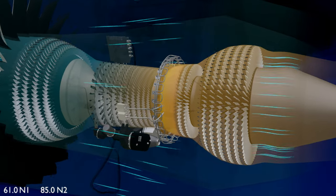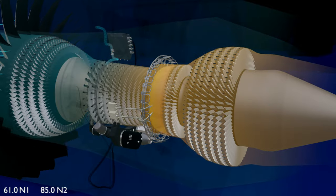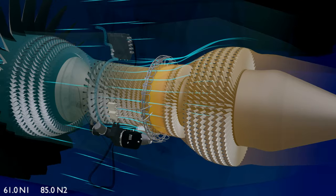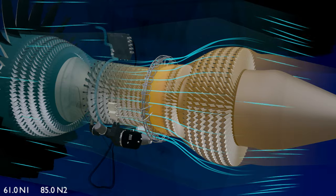One of the unique systems on the GE90 is the core compartment cooling. The engine bypass air through a CCC valve is circulated outside the core case to keep the temperature in the section down and ensure the engine accessories continue to function in a controlled environment.